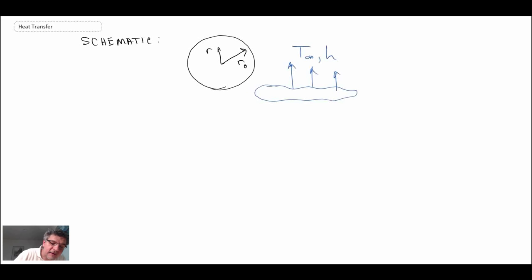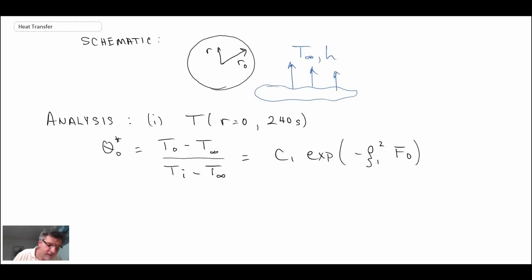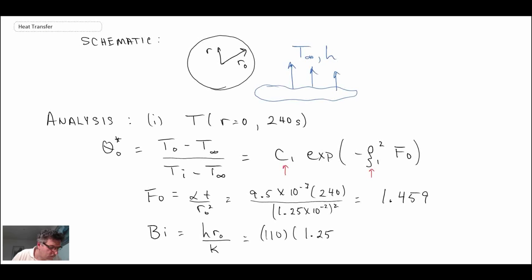So the analysis - let's begin the analysis with part one. That's where they ask us to determine what is going on at the center line, T at r = 0 at four minutes which is 240 seconds. We'll use the equations that we presented in the last lecture. We have to evaluate the Fourier number as well as the Biot number because we need the Biot number to get c₁ and ζ₁ from a table. The Fourier number is 1.459 and the Biot number is 0.9046.